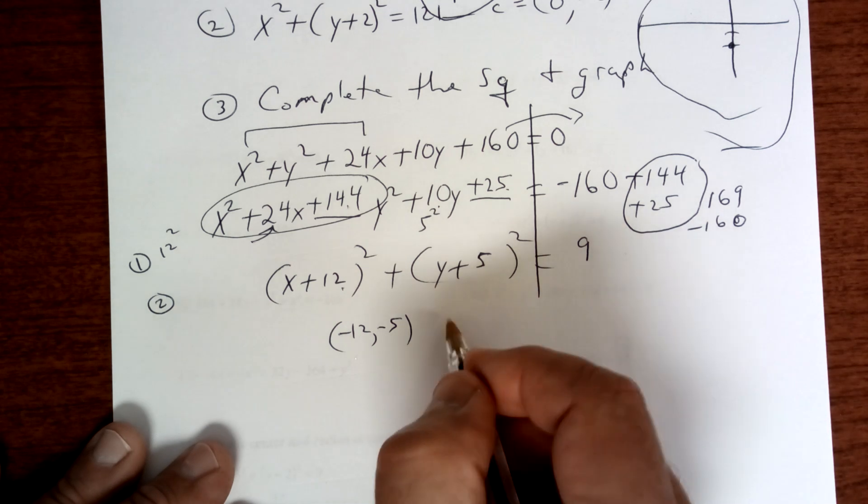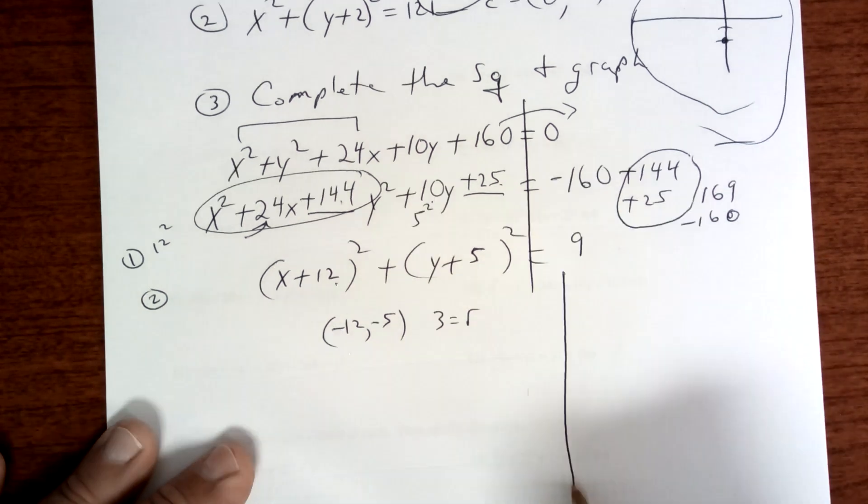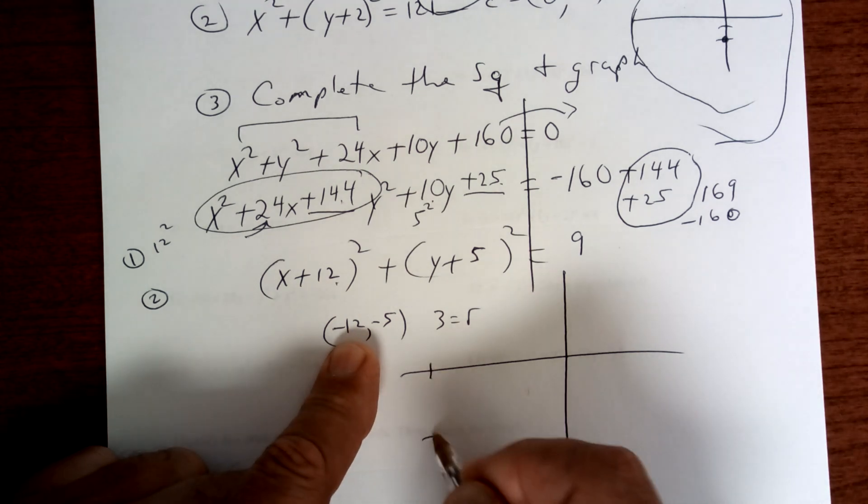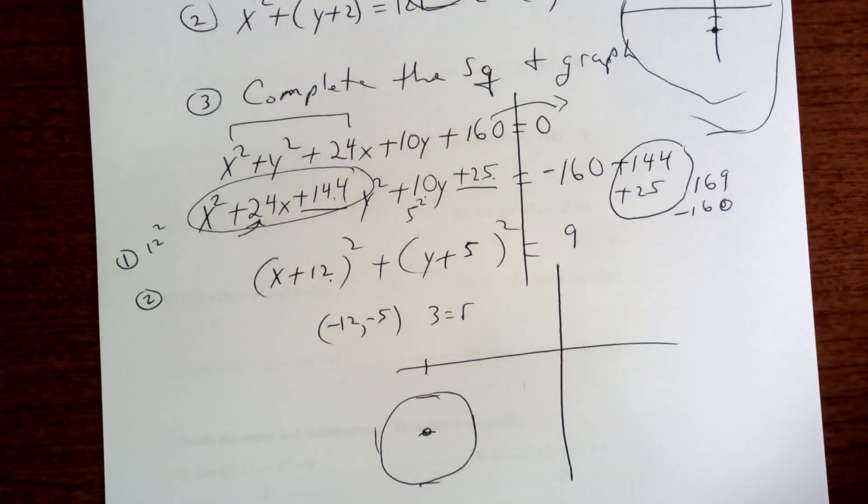Okay, once you do that, it's opposite, opposite, square root. Square root of 9 is 3. Any questions on that? So you're going to go down, or rather to the left 12, and then down 5. Then you're going to go up 3, over 3, down 3, over 3, and draw your circle.